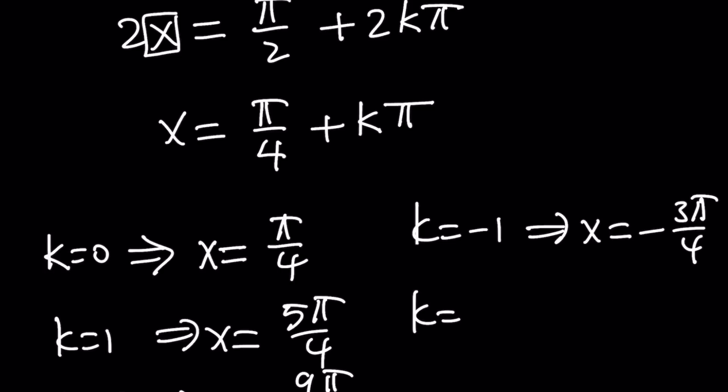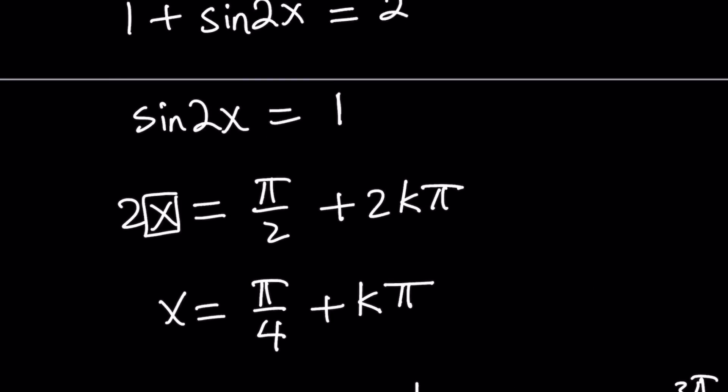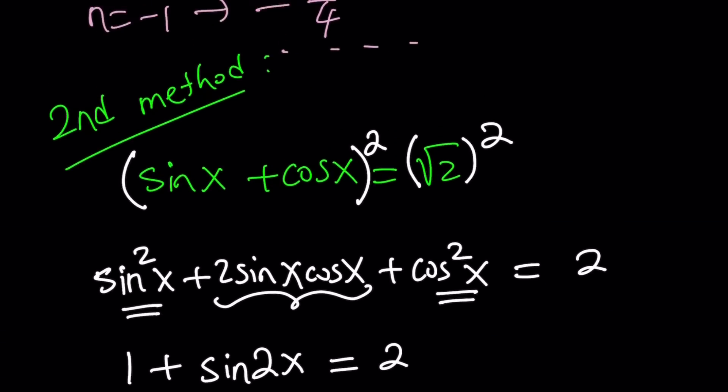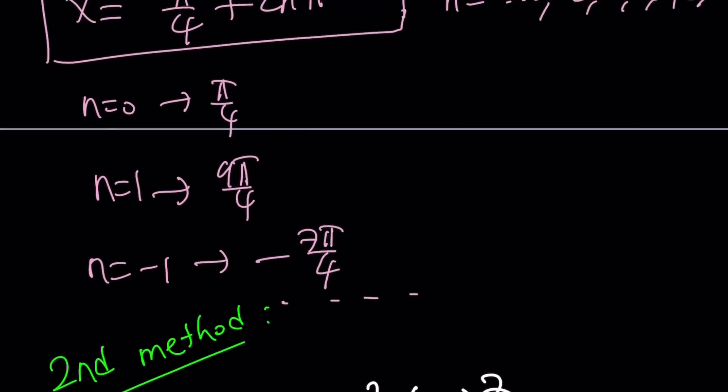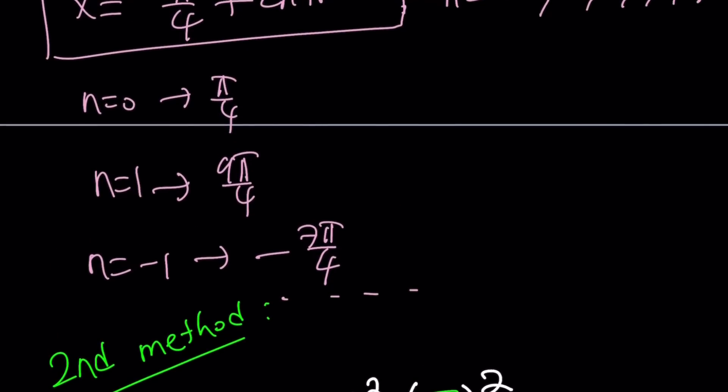If k is negative 1, then x is negative 3 pi over 4 and so on and so forth. Let's use negative 2 as well. That's going to give us negative 7 pi over 4. Now if you look at the original problem, I mean the first method, you're going to notice that we're not getting all these solutions.